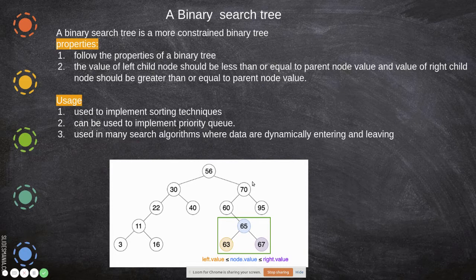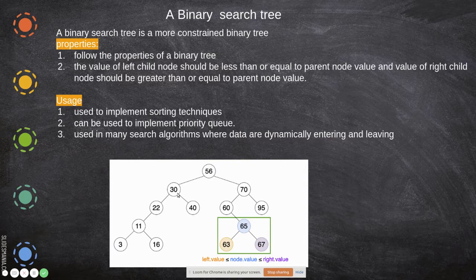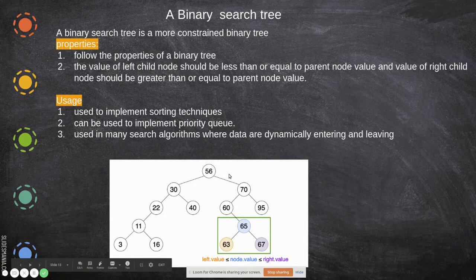In a binary search tree, the main difference from a binary tree is how the data is arranged. The same strict rule applies — a node can have only two children. However, the left child's data will be lesser than or equal to the parent, and the right child's data will be greater than or equal to the parent.